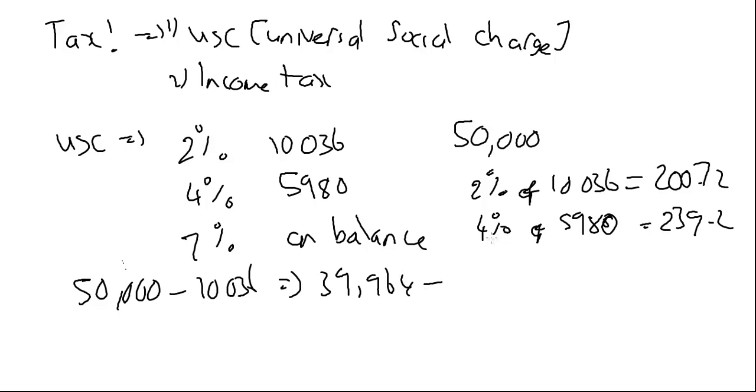I pay 4% on the next 5,980, so I take away 5,980 from that to get 33,984. So I pay 7% on that. So 7% of 33,984 is equal to 2,378 and 88 cents.